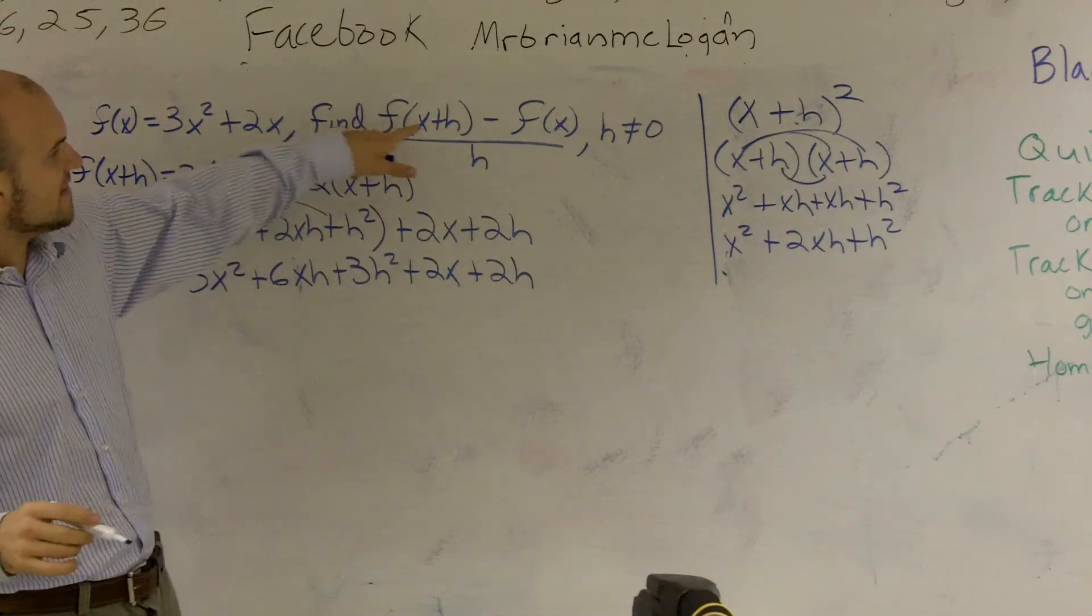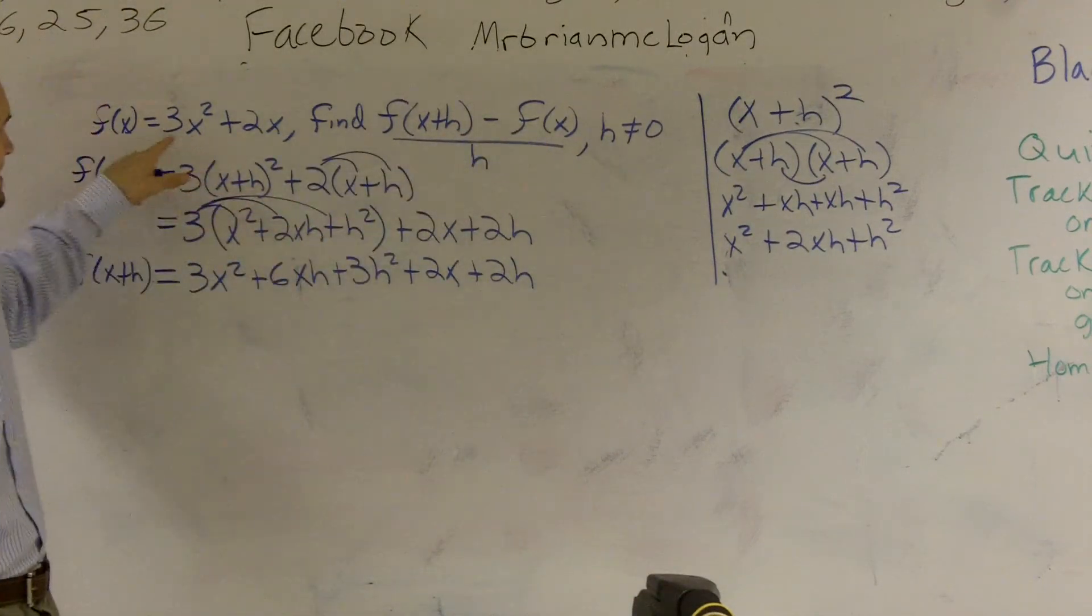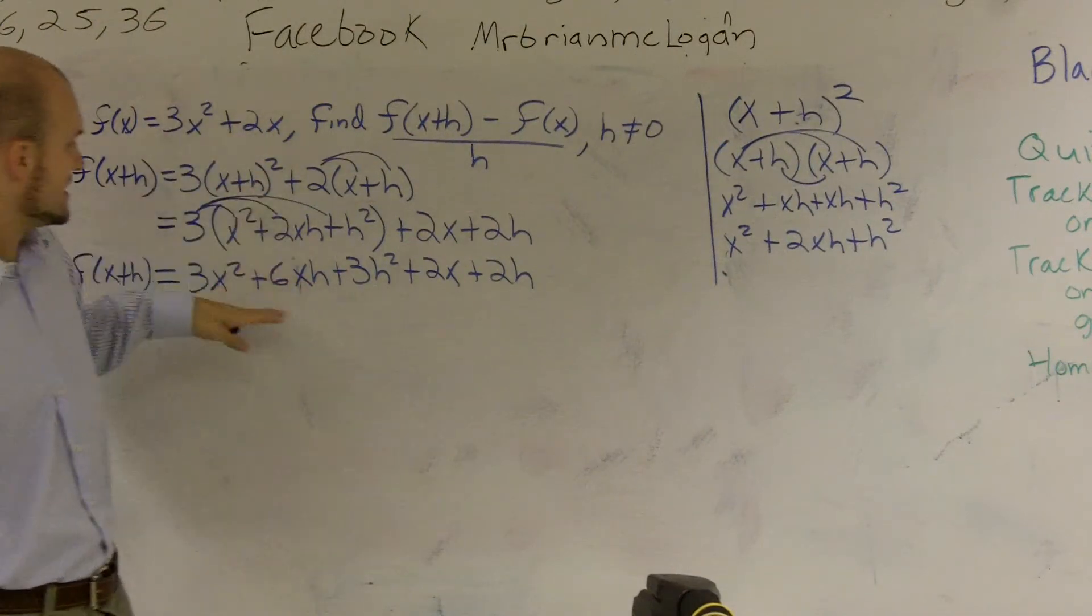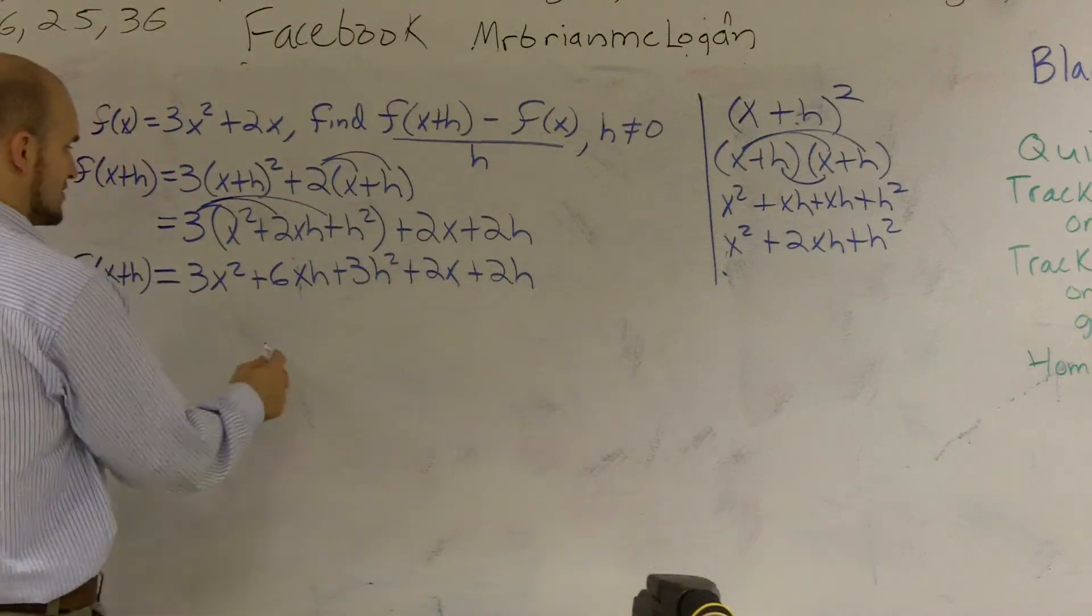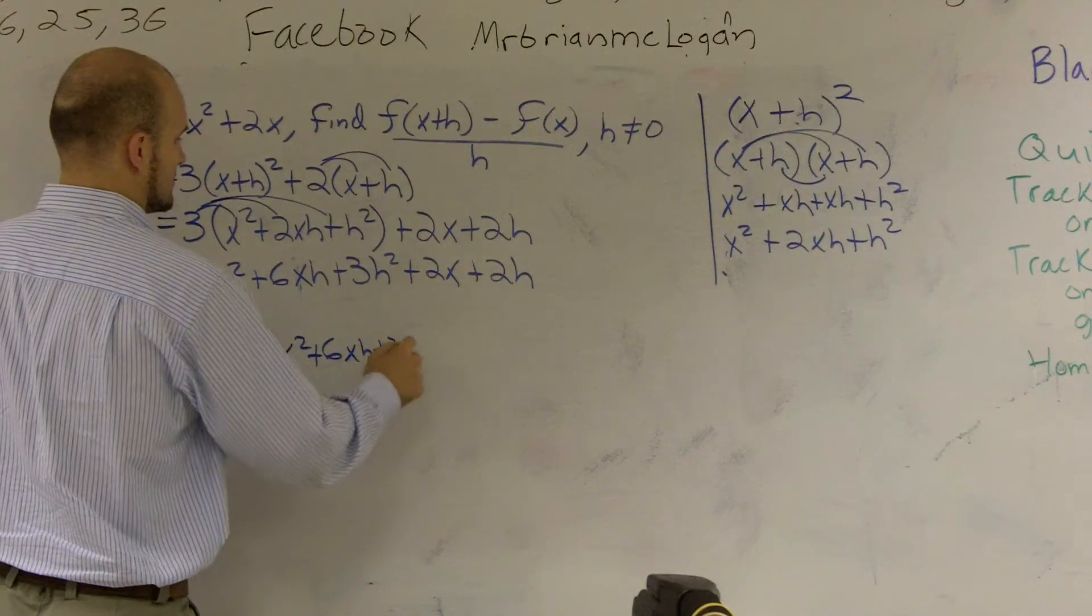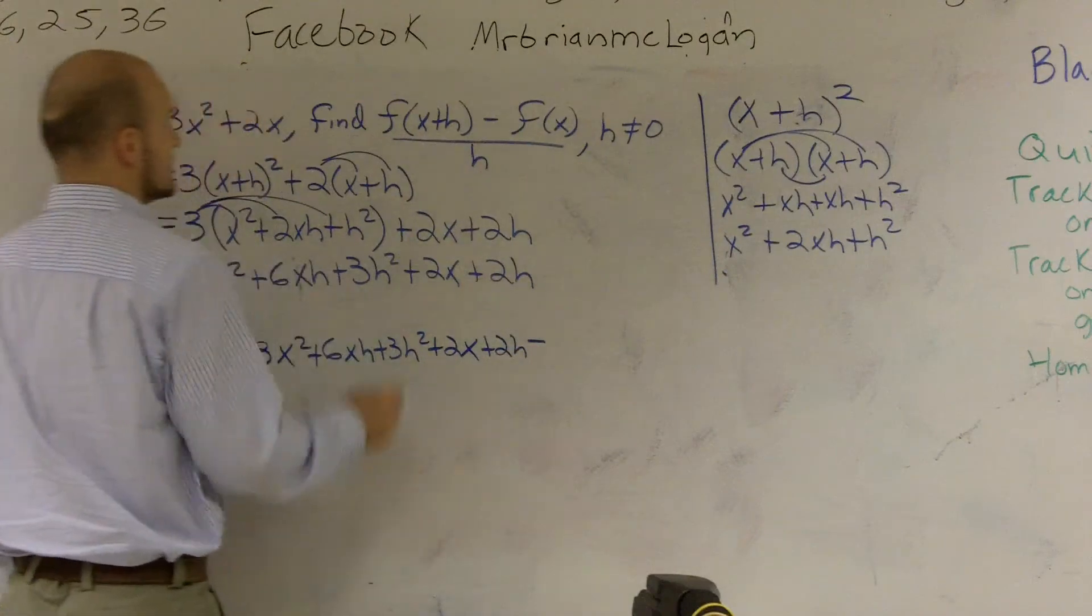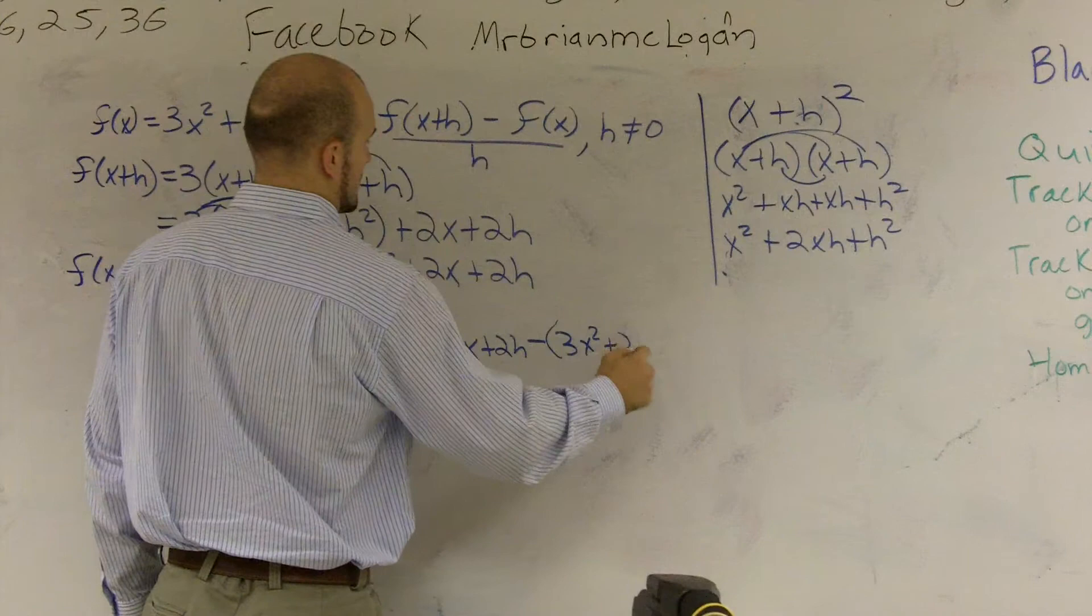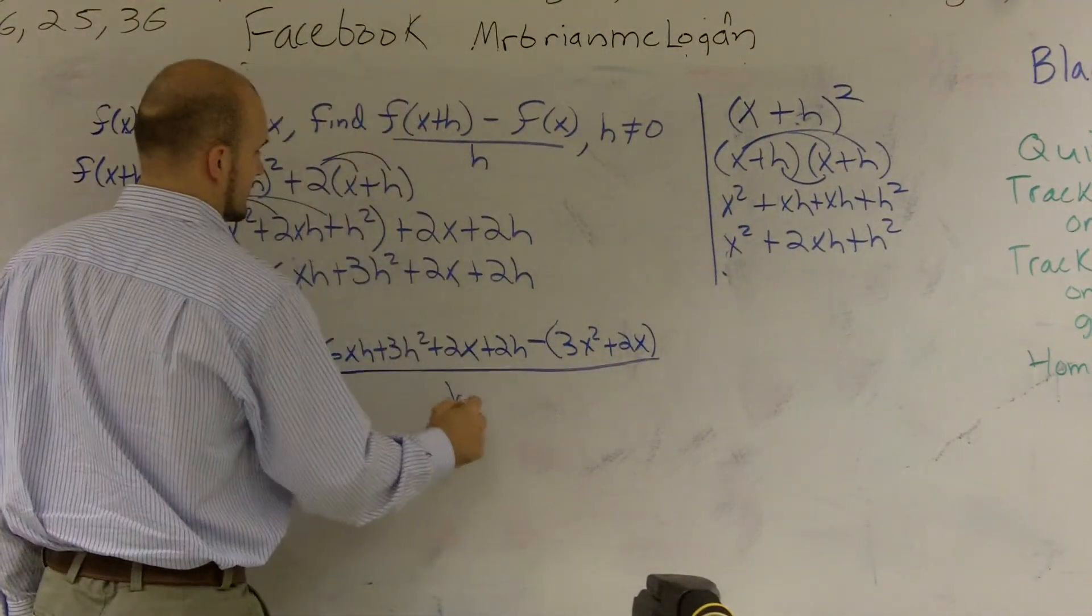But it says I want you to take $f(x + h)$, which is this, and I want to subtract it from $f(x)$. So $f(x)$ is $3x^2 + 2x$. So I'm going to take this minus this and then divide by $h$. So I'm just going to rewrite it again, just because I like to rewrite and do a lot of stuff.